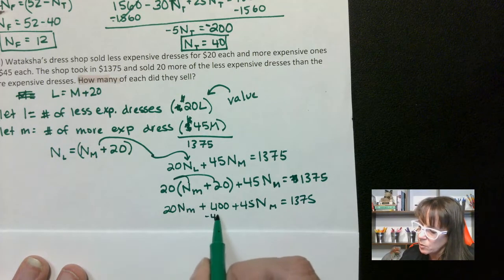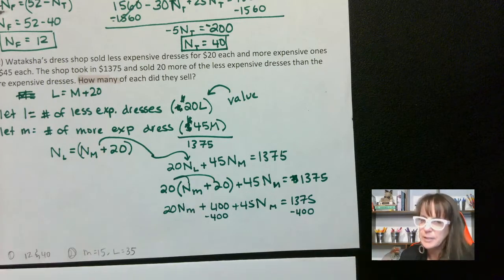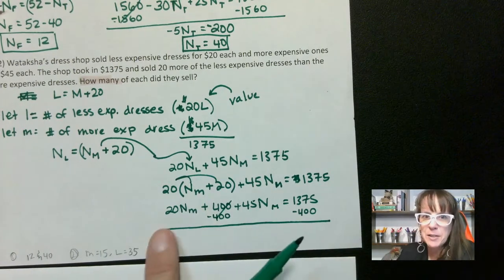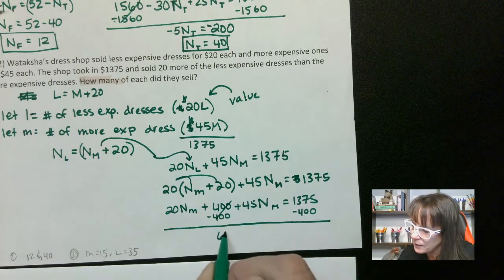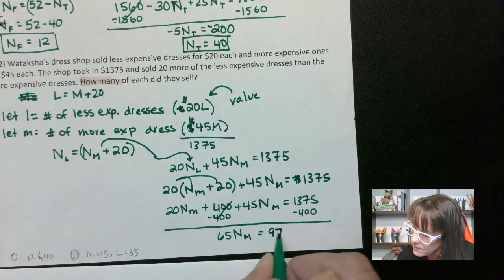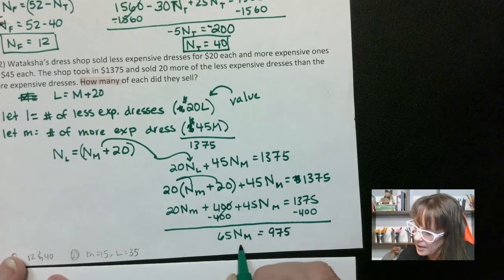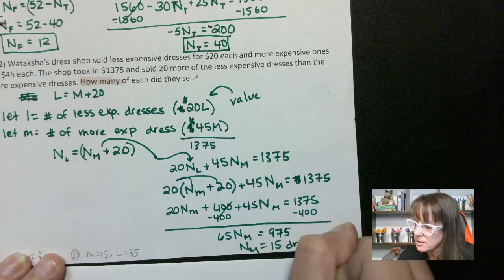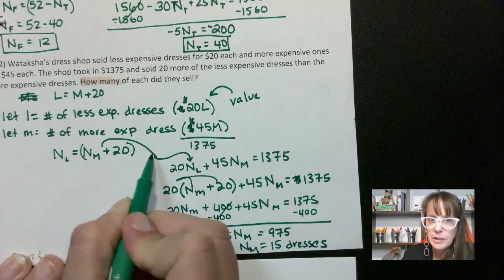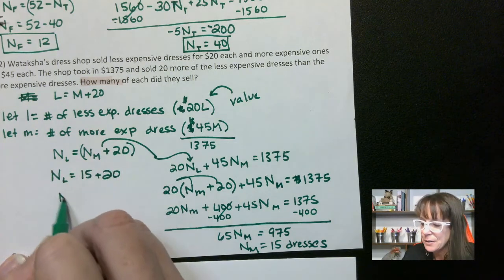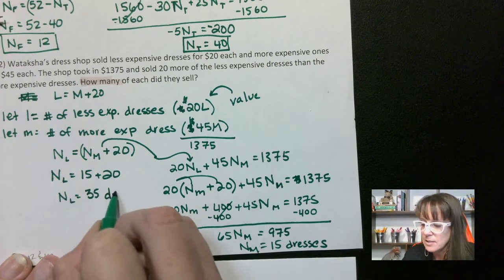Now I'm going to minus 400 from both sides. Combining like terms: 20 N sub M plus 45 N sub M is 65 N sub M equals 975. Divide that by 65 and we get N sub M equals 15. So the number of more expensive dresses sold was 15.